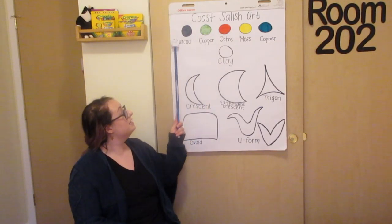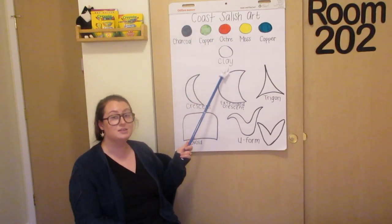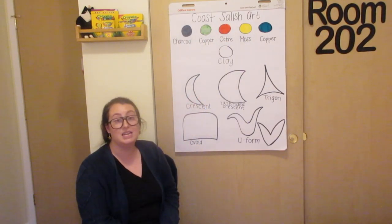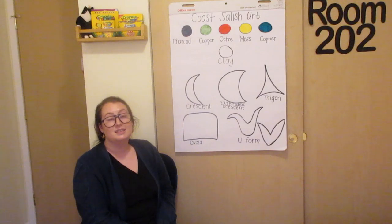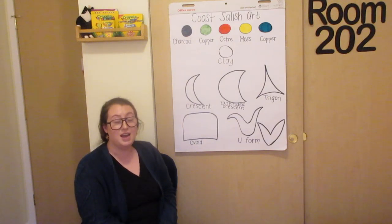So, these are the six colors that appear in Coast Salish art. Now, let's talk about the shapes. Coast Salish art has a lot of different shapes.